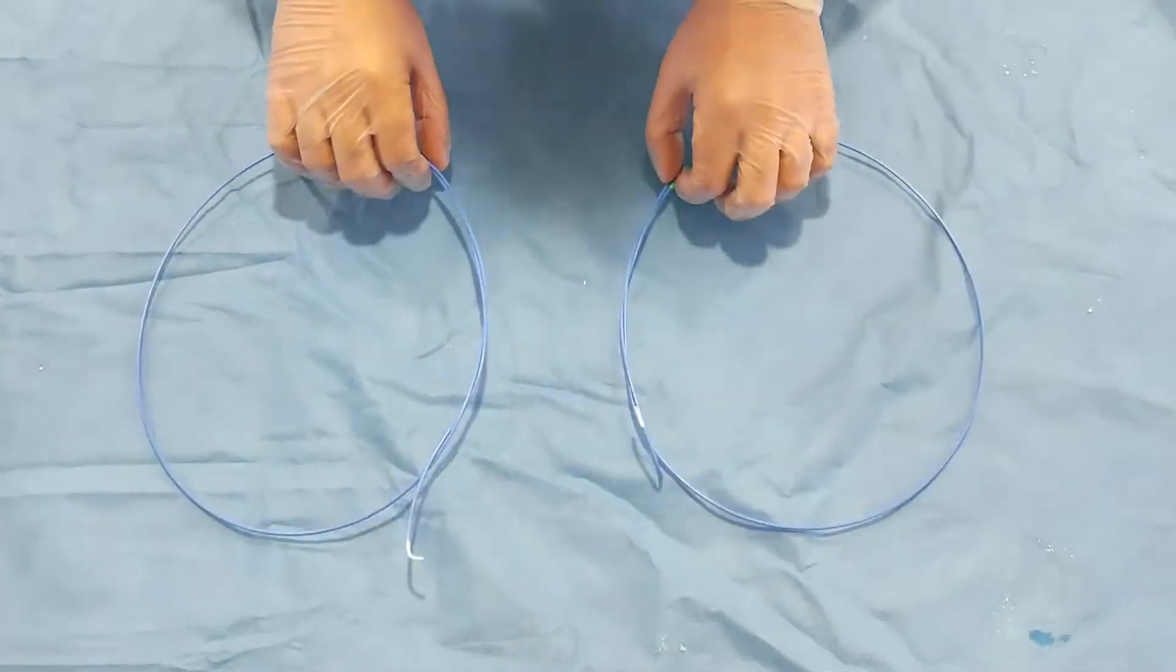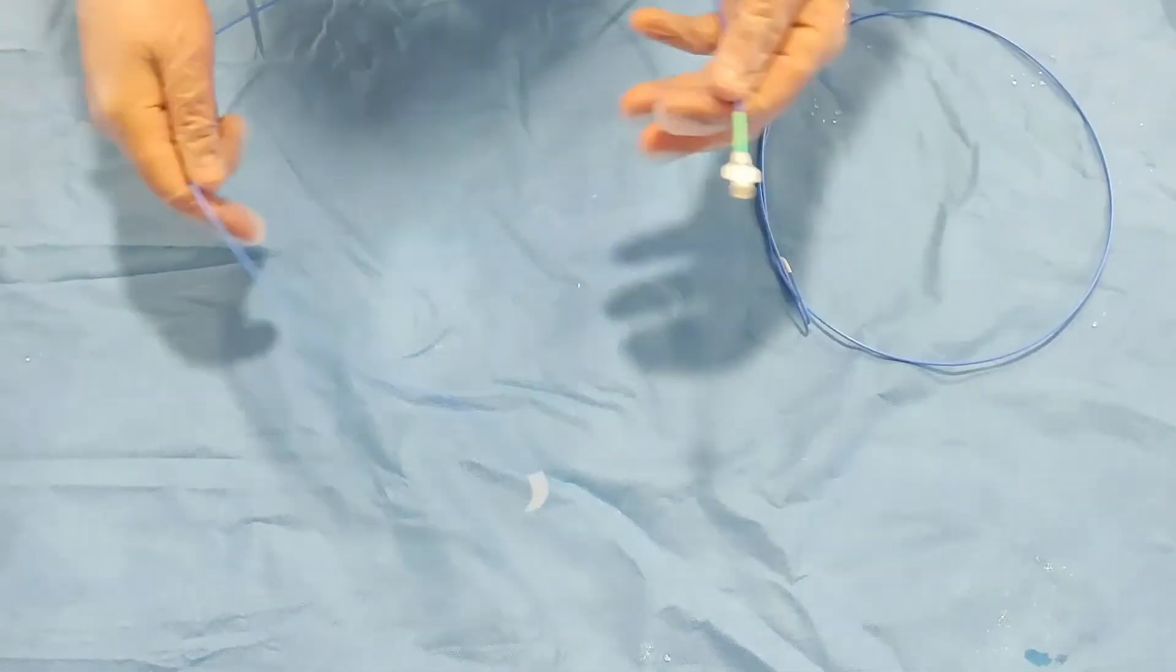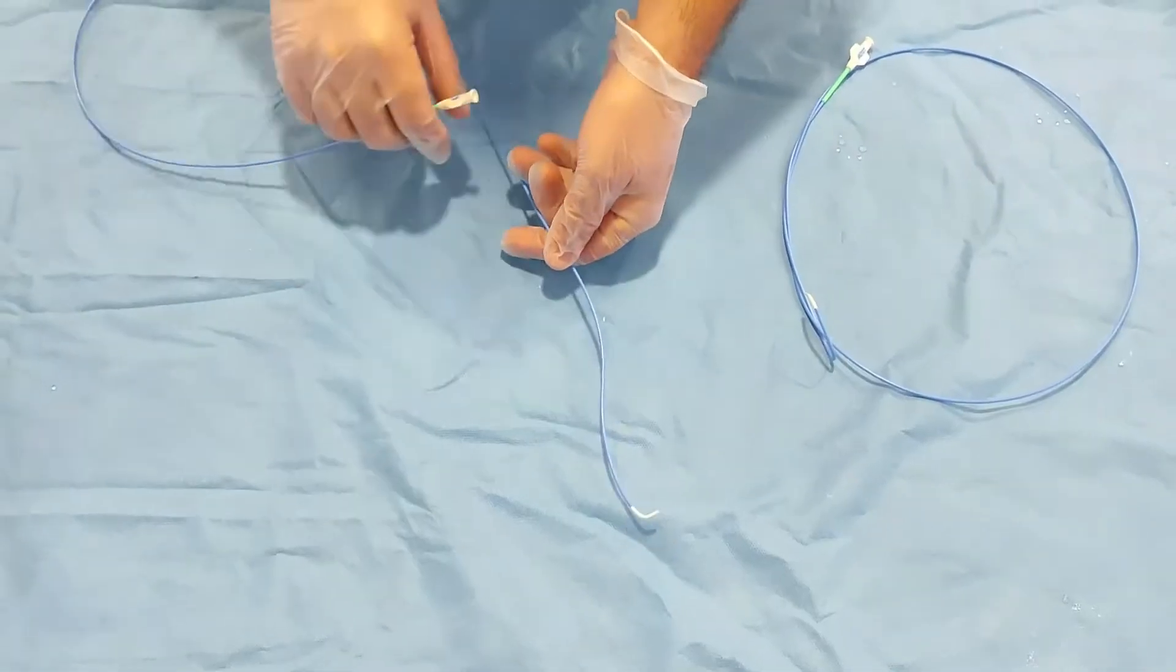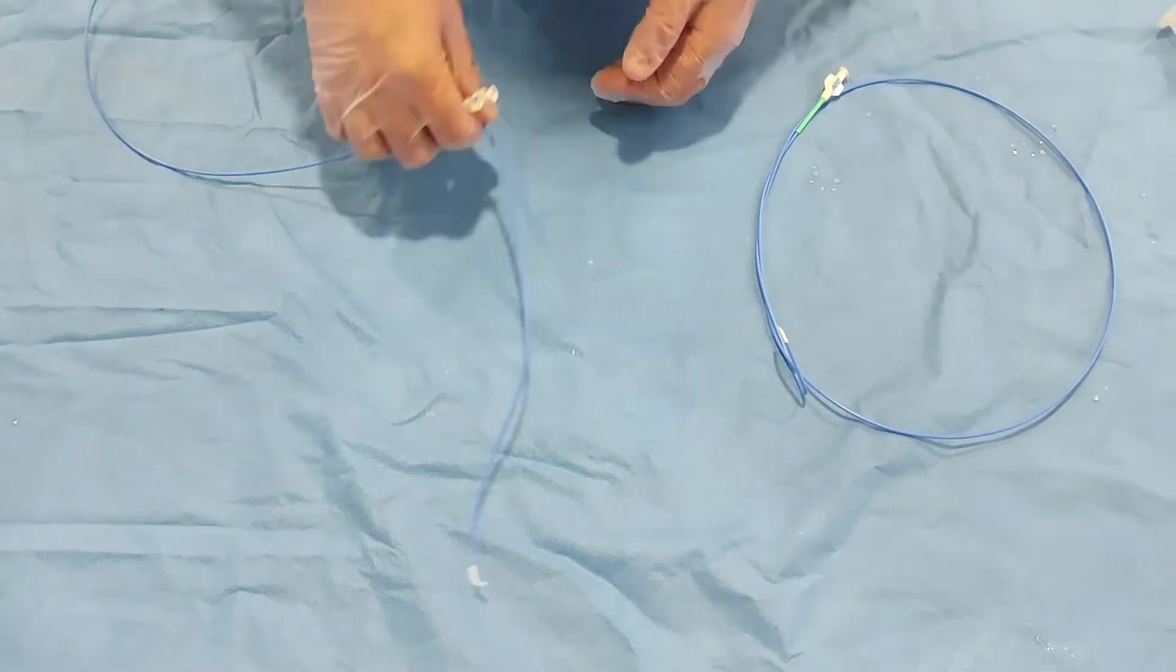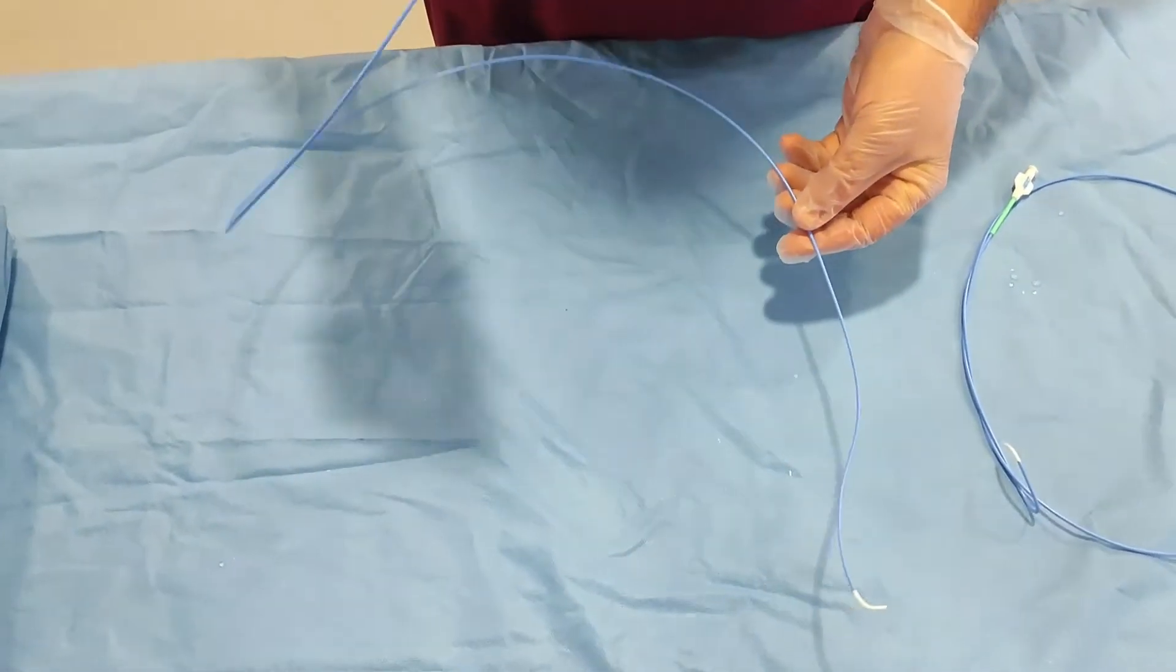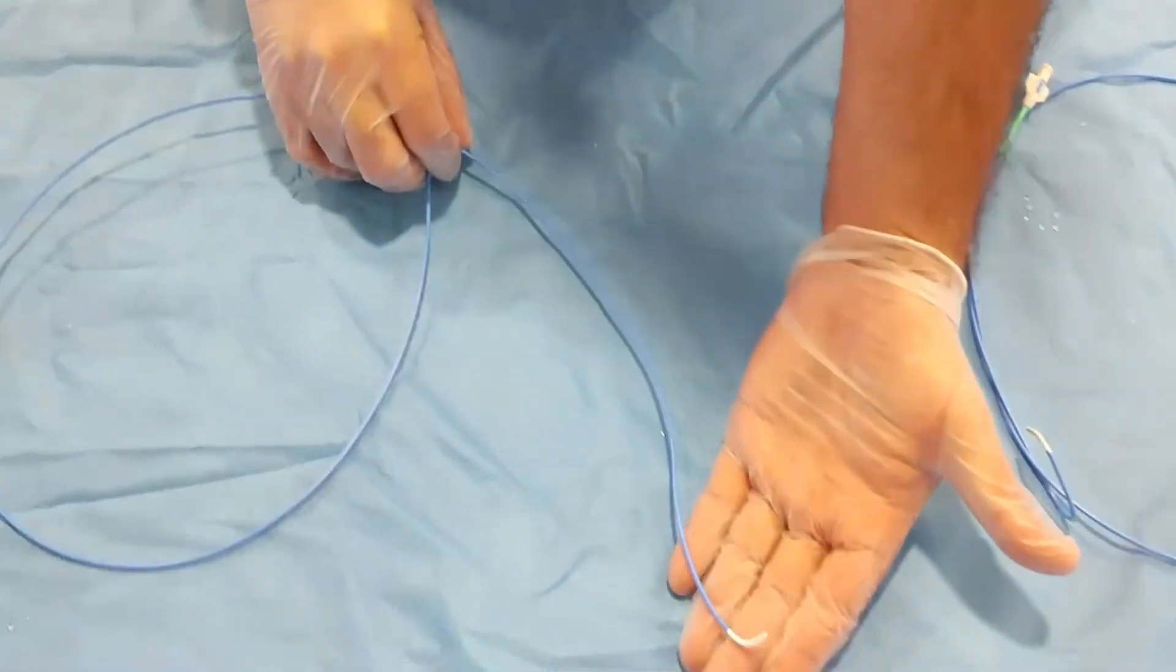After opening you will find the catheter. This is the diagnostic right catheter known as the JR4. JR stands for Judkins right. Judkins is the one who invented this catheter. This is used for a right coronary angiogram.